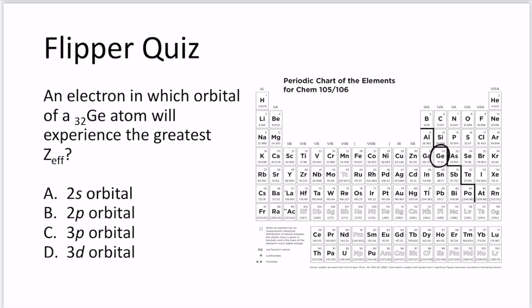And the greatest Z-effective is going to be experienced by those that are closest to the nucleus. So 3p and 3d are going to be out because they're in a higher energy level. 2s and 2p are going to be different from each other because the 2s orbital is going to be closer, having electron density that's closer to the nucleus. So the 2s orbital, the electron that's in that orbital, is going to experience the highest Z-effective.